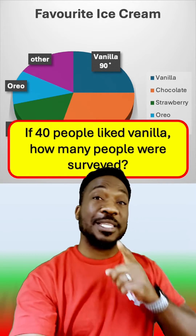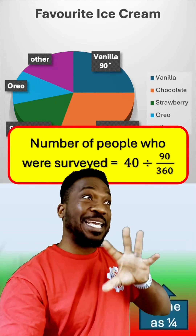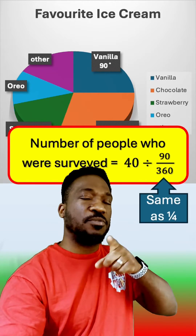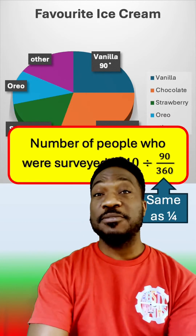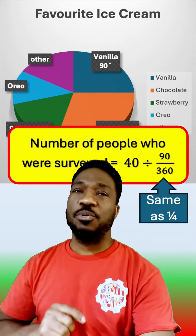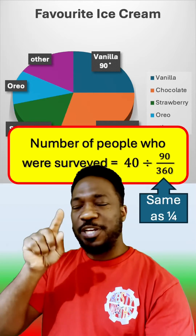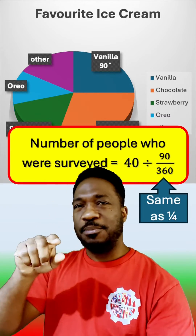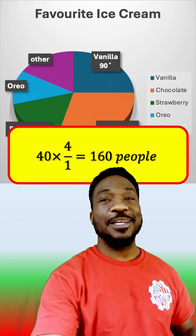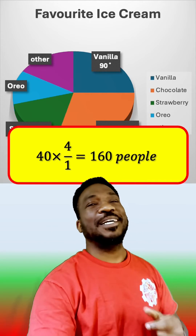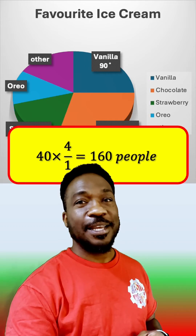In order to work that out you need to work backwards, so you need to do the inverse of what you have done. It's going to be your 40 divided by a quarter, which when you do your fraction magic you change your divide to multiply, you reciprocate that quarter into 4 over 1, and then you'll work out that it's 160 people that were surveyed.